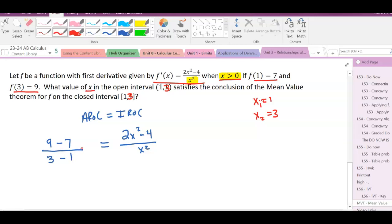Well, 9 minus 7 is 2, 3 minus 1 is 2, so that means our average rate of change is 1.